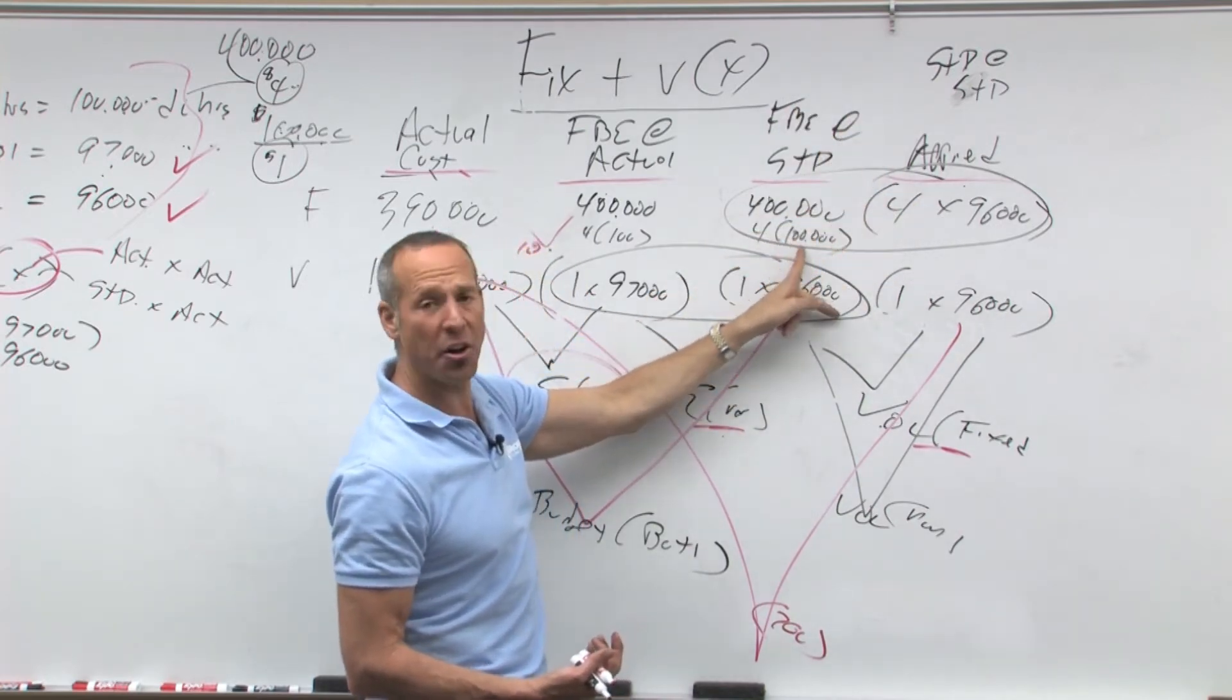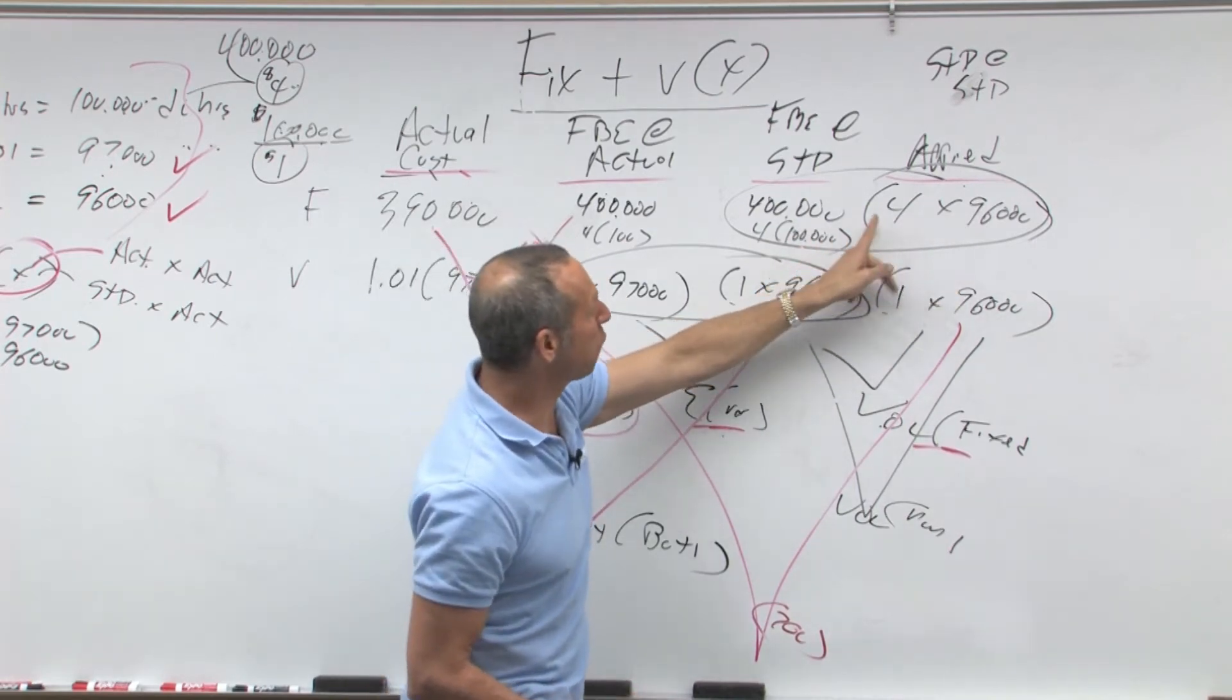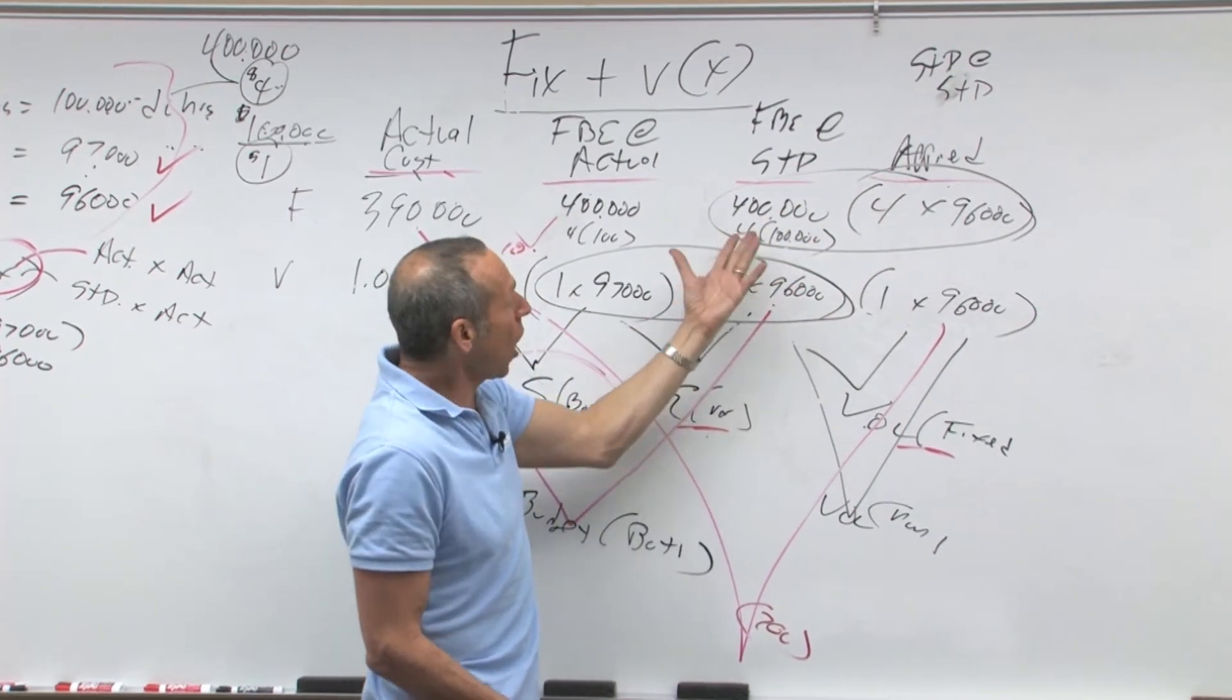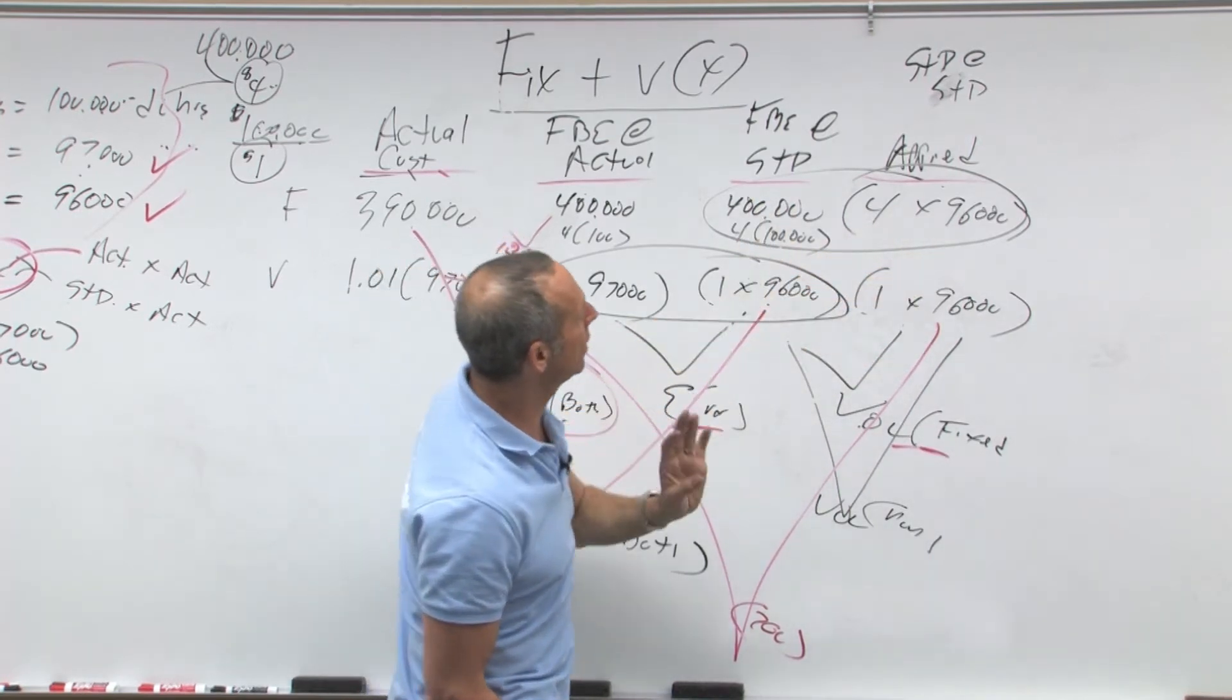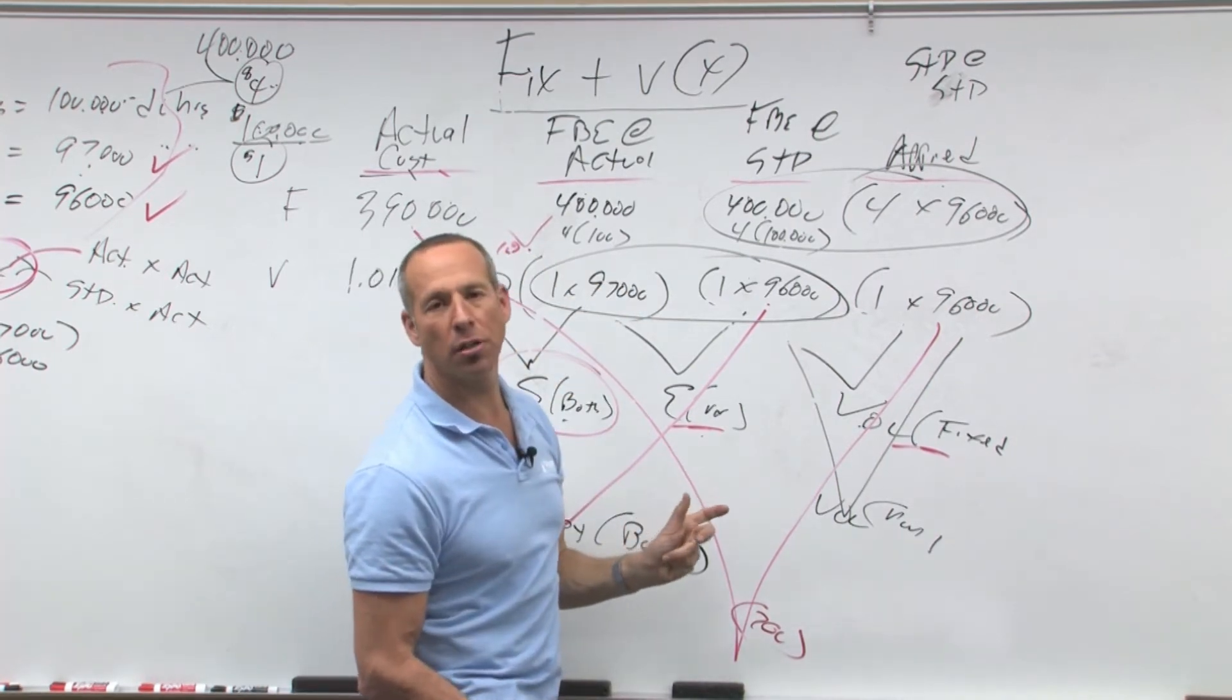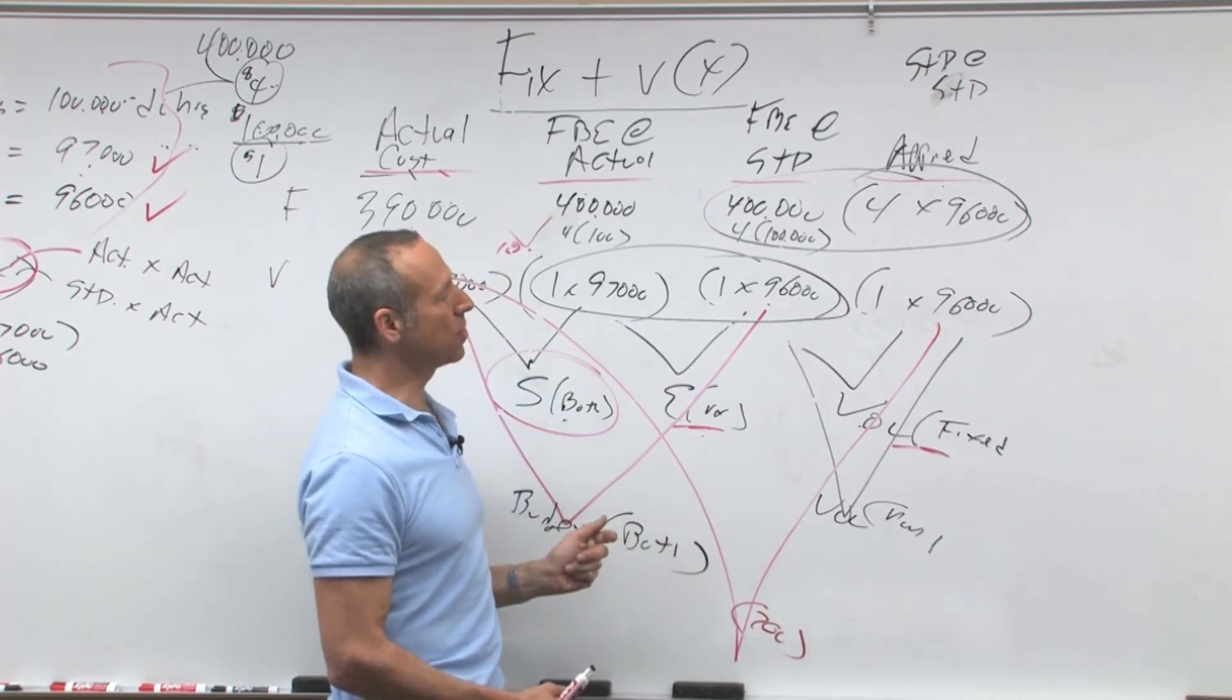Because we budgeted 100,000 units, standard allowed was only 96,000, that means $4 times 4,000 equals 16,000 unfavorable. We thought we were going to use 400,000, but we only used four times 96,000, which is 384,000, that's the difference.